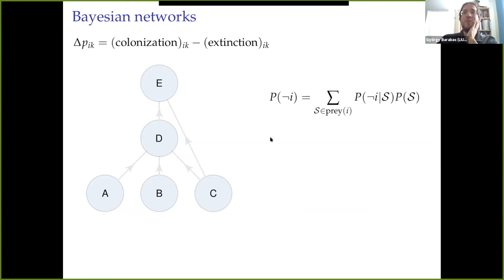And once we have this probability, the extinction likelihood of species i in patch k is equal to this particular quantity, the likelihood that the species doesn't manage to survive in patch k. I say proportional to because here I've been talking about probabilities, but these extinction rates are rates and we have to convert between them, but that's a technical detail. So that is the idea on how we're going to model trophic communities.